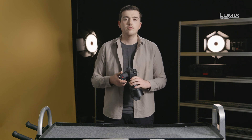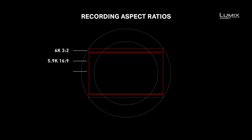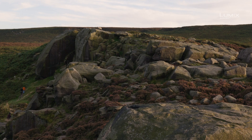The S1H comes equipped with a 24-megapixel sensor that's capable of recording up to 6K resolution in 3x2 aspect ratio, and 5.9K resolution in 16x9. On top of these, you have the ability to shoot in Cinema 4K resolution — the standard for cinema — UHD 4K, the 16x9 standard for television, 4x3 Super 35 Anamorphic 4K, as well as 1080p Full HD modes as well.